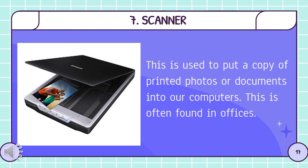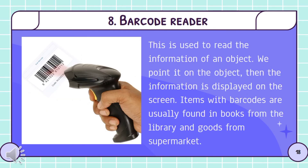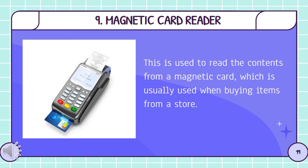This is used to put a copy of printed photos or documents into our computers. This is often found in offices. Number 8: Barcode reader. This is used to read the information of an object. We point it on the object and then the information is displayed on the screen. Items with barcodes are usually found in books from the library and goods from the supermarket. Number 9: Magnetic card reader. This is used to read the contents from a magnetic card, which is usually used when buying items from a store.